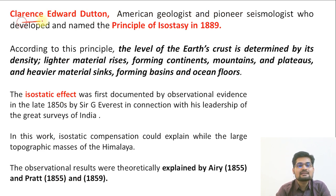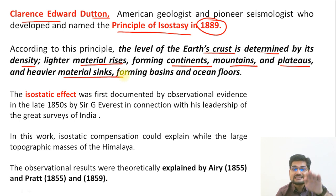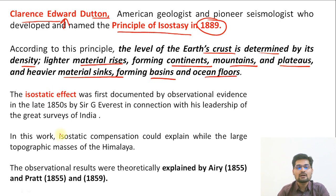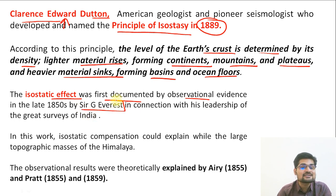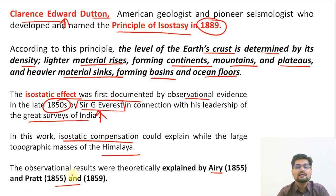Clarence Edward Dutton's principle of isostasy in 1889 stated that the level of earth's crust is determined by density — lighter material rises forming continents, mountains, and plateaus, while heavier material sinks forming ocean basins and floors. Remember that the isostatic effect was first documented by Sir George Everest's observation while working with the Great Survey of India, where he noted isostatic compensation in the Himalayas in the 1850s.